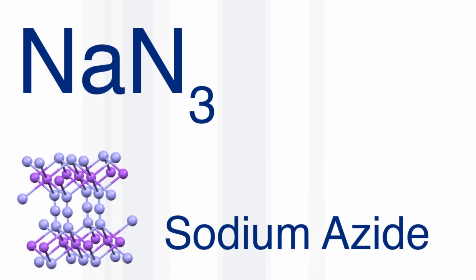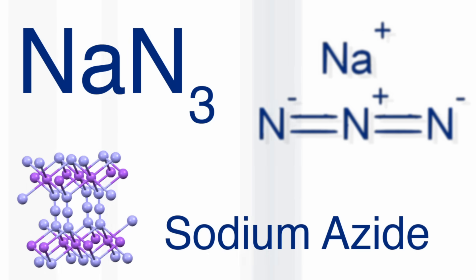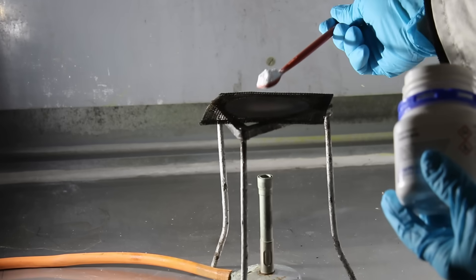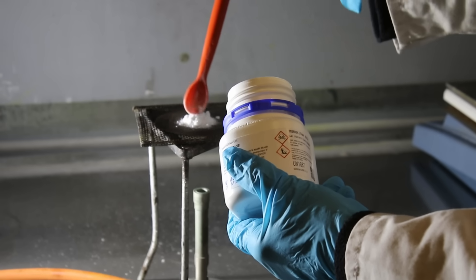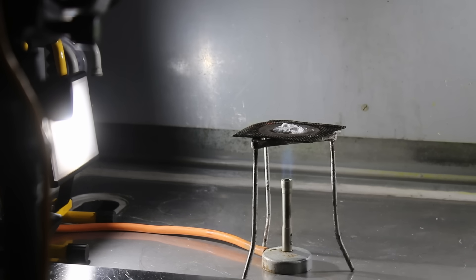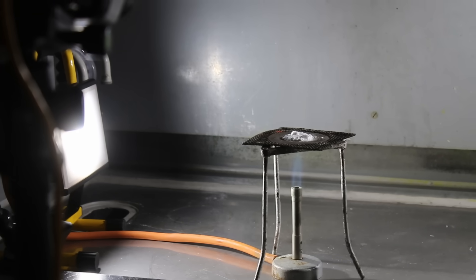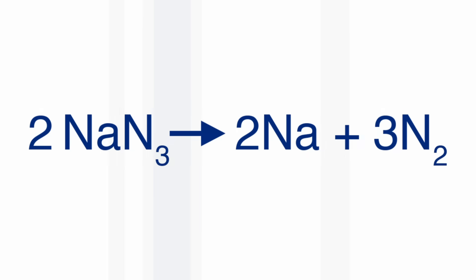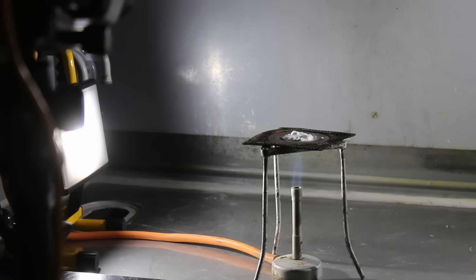So sodium azide is a salt of sodium Na plus and the azide ion N3 minus. Azide comes from the French name for nitrogen azote. N3 minus is potentially a very unstable anion. If you heat it, it can turn to nitrogen gas. N2 has a very strong bond between the two nitrogen atoms so it releases a lot of energy. So we tried heating sodium azide. The reaction is quite simple. It goes to nitrogen gas and sodium vapor. The sodium immediately reacts with oxygen and water vapor in the atmosphere. So you get an orange colored flame from the reaction of sodium.